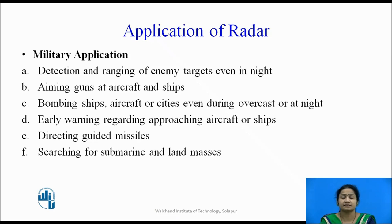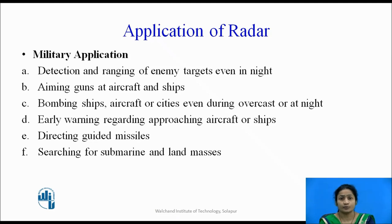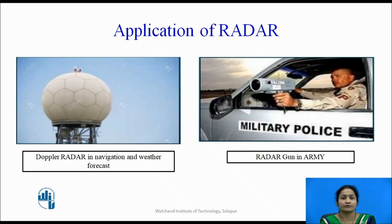In military applications, radar is used for detecting and ranging enemy targets even at night. On the border side, radar systems detect targets in the dark because they can transmit signals into the darkness. Applications include aiming guns at aircraft and ships, bombing ships, aircraft, or cities even through overcast at night, early warning regarding approaching aircraft or ships at airports and stations, detecting guided missiles, and searching for submarines and landmasses. These are the key applications of radar systems.